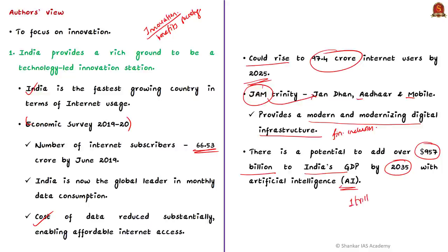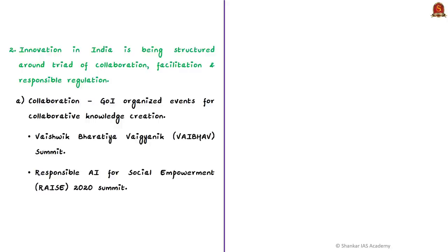The second reason is that innovation in India is structured around a triad of collaboration, facilitation, and responsible regulation. With respect to collaboration, the Government of India organized events for collaborative knowledge creation. For example, Vaishvik Bharatiya Vaigyanik — shortly VAIBHAV — celebrates science and innovation from India and the world. It is a collaborative initiative by science, technology, and academic organizations of India. It aims to bring out a comprehensive roadmap to leverage the expertise of global Indian researchers for solving emerging challenges.